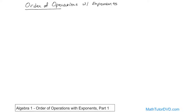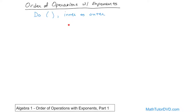A long time ago we talked about this, but we didn't know what an exponent was — now we do. The first thing you always do, and nothing has changed here: the top most important priority is you do the parentheses or brackets, whatever was written down. You always do those first, inner to outer. Which means if you have multiple sets of parentheses nested inside one another, you always do the innermost ones first, then work your way to the outermost ones. That's number one.